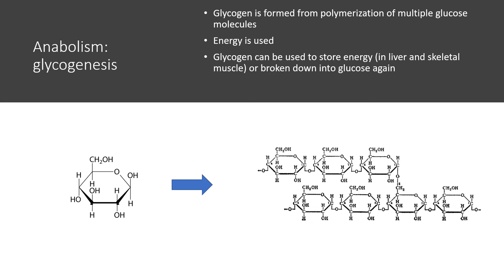Now let's talk about glycogenesis. Glycogen is formed from the polymerization of multiple glucose molecules — you get a bunch of glucose molecules, put them together, and make glycogen. Energy is used since it's an anabolic reaction. This glycogen is used to store energy, especially in the liver and in skeletal muscle, or it can be broken down to form more molecules of glucose.